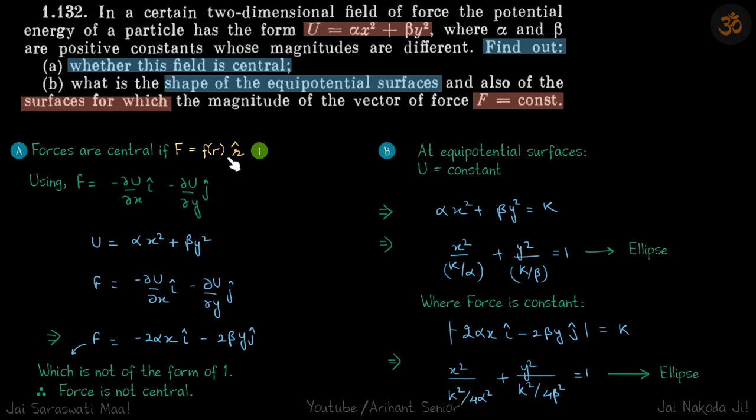This is the force we have obtained, and you can see that it is not of the form f(r) times r cap. Therefore, the force is not central. If alpha and beta values were the same, then it would be a central force. But they have given that alpha and beta magnitudes are different, which means this cannot be written in the form of something times r cap.